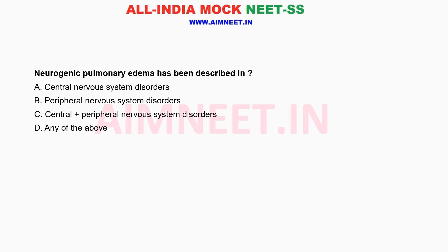Neurogenic pulmonary edema has been described in: A. Central nervous system disorders. B. Peripheral nervous system disorders. C. Central plus peripheral nervous system disorders. D. Any of the above.